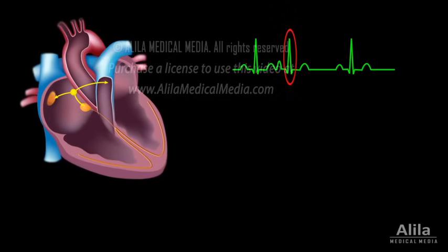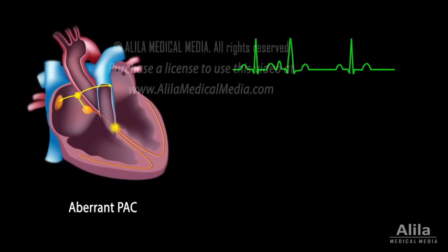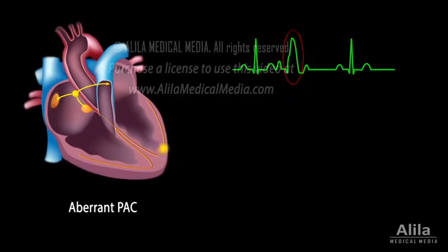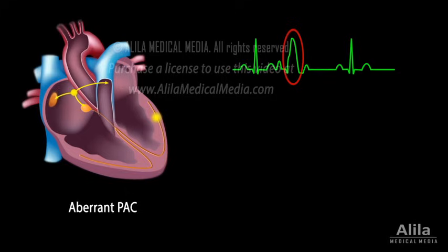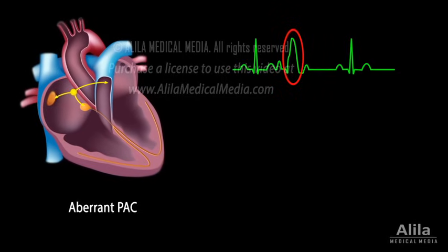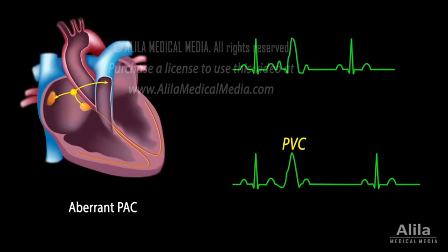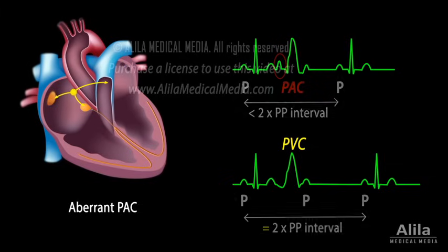Occasionally, however, ventricular conduction may be aberrant, causing a widened QRS complex, usually with right bundle branch block morphology, which may look similar to a premature beat of ventricular origin. In this case, differentiation is made based on the presence of a preceding P wave and a non-compensatory pause in PAC.